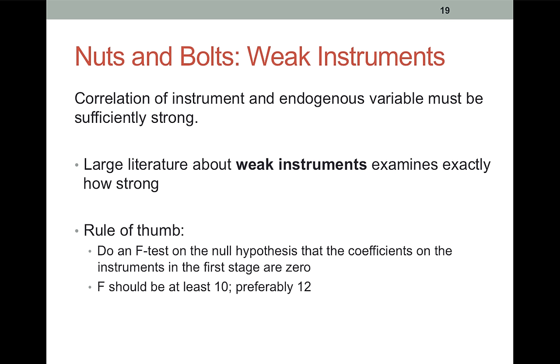Now one of the most important things to worry about when you're doing IV is that your instrument is sufficiently correlated with your endogenous variable. This turned out to be a serious problem with the quarter of birth as an instrument for years of schooling. A rule of thumb that many people use now is that they do an F test on the null hypothesis that the coefficients on the instruments in the first stage are 0. The F statistic for this test should be at least 10 and preferably 12 for the instrument to be strong enough to use. Now in 1995, Bound, Jaeger and Baker published a paper that showed that quarter of birth, if you do these F tests, you get values of 2.4 and 1.87, depending on which specific model you use. And those are obviously a lot lower than 10 or 12.